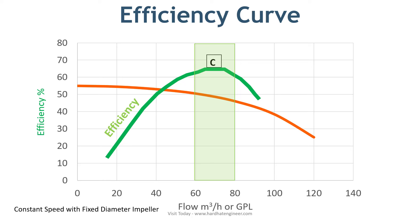The next pump performance curve is the efficiency curve. All charts in this video are plotted for a constant speed, fixed diameter impeller pump — meaning a standard motor running at constant speed with the same impeller diameter for all performance charts. For this efficiency curve, pump efficiency will initially increase, reach a maximum, and then decrease with increasing flow rate. To understand this, let's continue with our garden hose example: keep the hose at 45 degrees so the water goes to the farthest point in the garden.